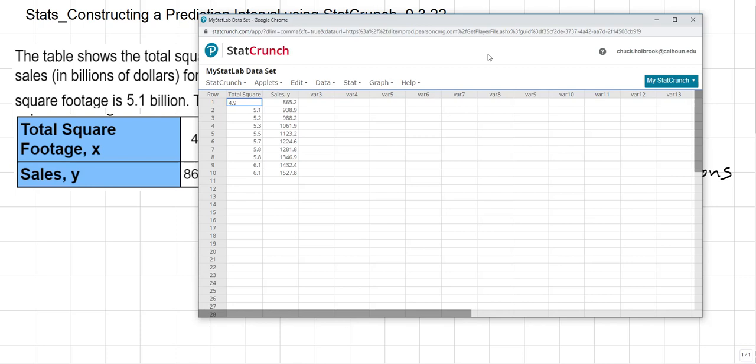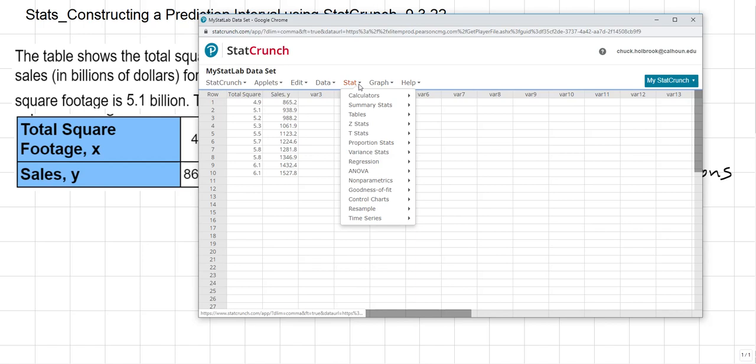And you can see that we have our variable total square, and this is going to be square footage. I can go ahead and change that if I want. And I can also look at sales Y here. So, in order to do this, we'll go to Stat.